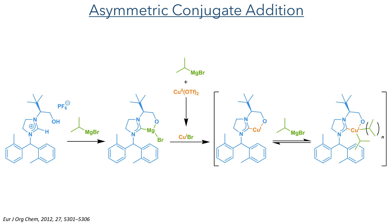The first step of the synthesis was an asymmetric conjugate addition. This reaction used a chiral N-heterocyclic carbene ligand which is first deprotonated by isopropylmagnesium bromide and then chelates another equivalent of this Grignard reagent. It has been proposed that copper(II) triflate is reduced by the Grignard, forming copper(I) bromide that can then coordinate to the NHC ligand and become alkylated, forming an isopropyl-ligated organocuprate reagent.